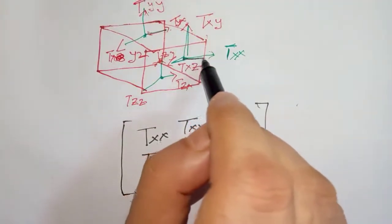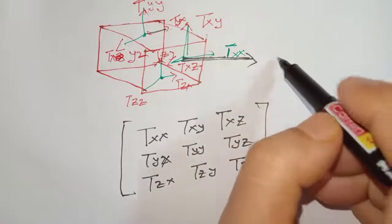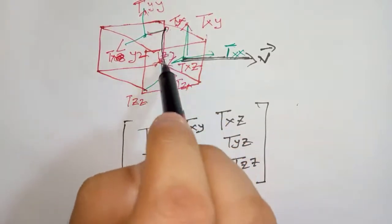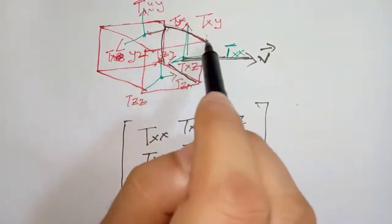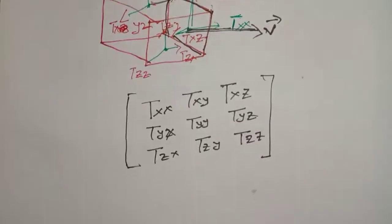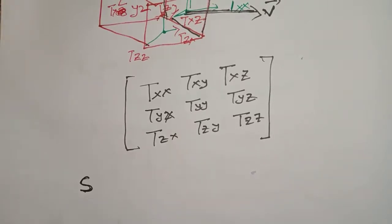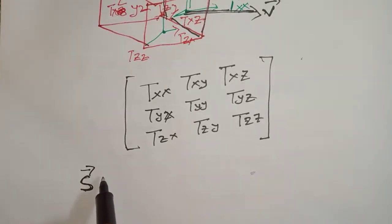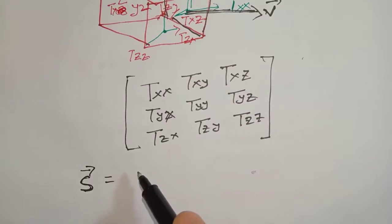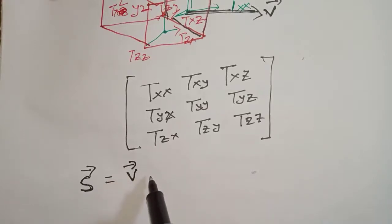For example, there is a straight vector being pointed here, which I call v. This vector v is perpendicular and coming out of this particular plane. To find the stress vector — which I denote as s — I take a dot product of the vector v with the tensor.